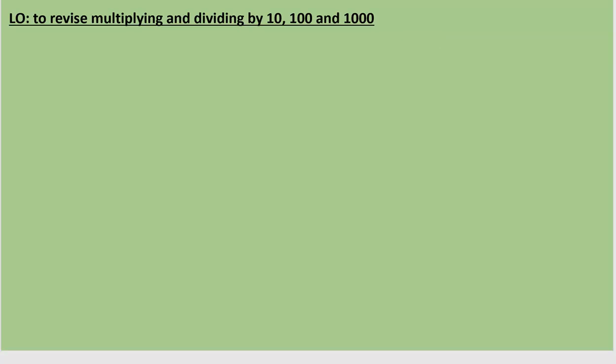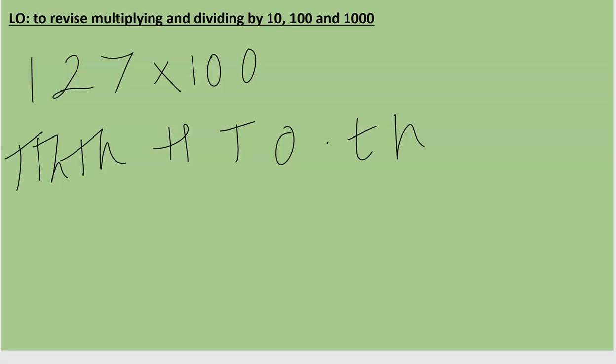So to begin with I'm going to show you how to multiply, let's do 127 times 100. Now we remember we're not using a formal method to do it this way. We're going to crack out our place value grid which you can see I've drawn on there and then I'm going to write in 127.